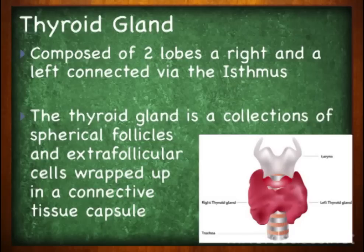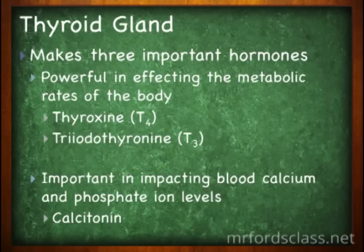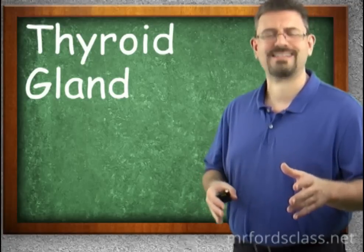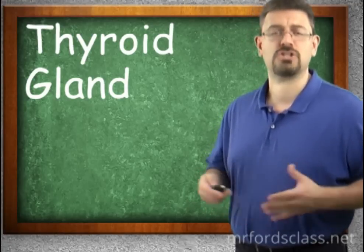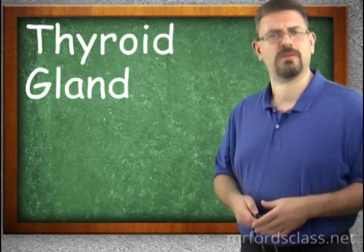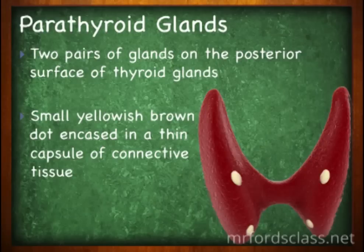The thyroid gland is a collection of spherical follicles and extra-follicular cells wrapped up in connective tissue. The follicle and extra-follicular cells produce the important hormones. The two main hormones, T3 and T4, deal with metabolism, while the third hormone, calcitonin, deals with calcium and phosphate ion concentrations in the blood. The term thyroid gland comes from the Greek adjective meaning shield-shaped, and you can kind of see where they came up with that.